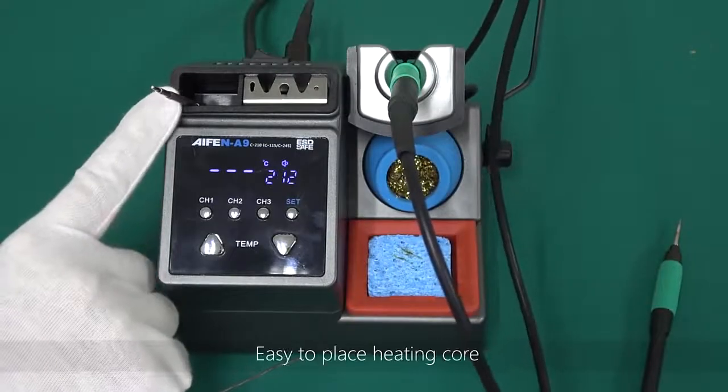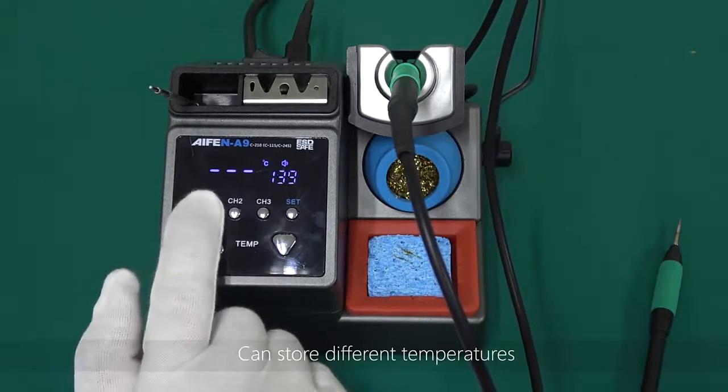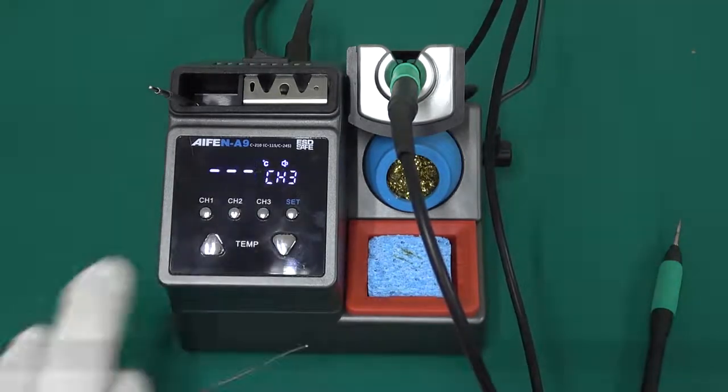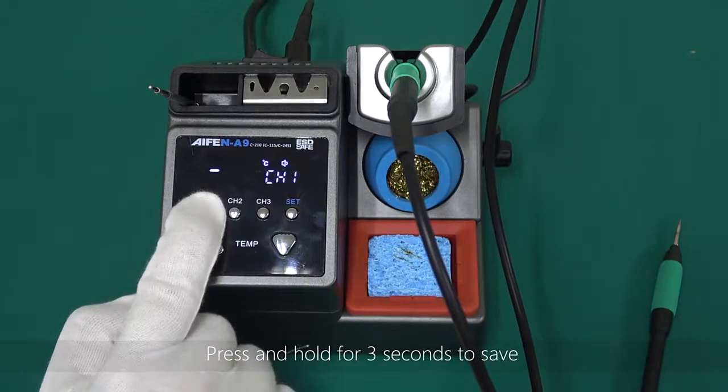Storage box. Easy to place heating core. Three sets of storage channel keys can store different temperatures. Short press for one second to read. Press and hold for three seconds to save.